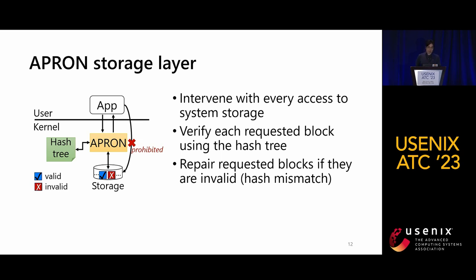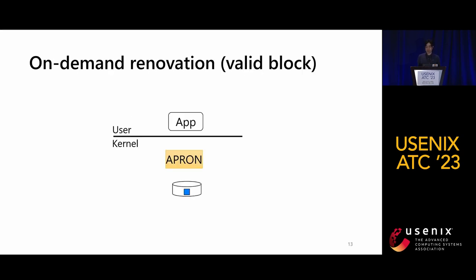This figure depicts how the APRON storage layer works. The APRON storage layer is located within the kernel to intervene with any access to the system storage, and any direct application access to the system storage is prohibited. When a block is requested, the APRON storage layer always verifies its content using the hash tree. If there is any hash mismatch, APRON tries to repair the requested block before returning it to the application. For a valid block: an application requests a data block, APRON intercepts it, retrieves the block from storage, verifies it using the Merkle hash tree, and if valid, simply serves the data to the application.